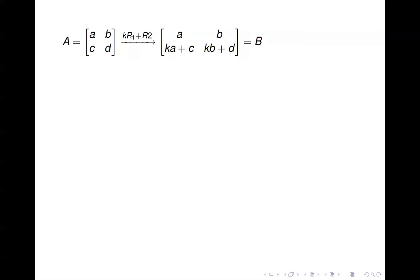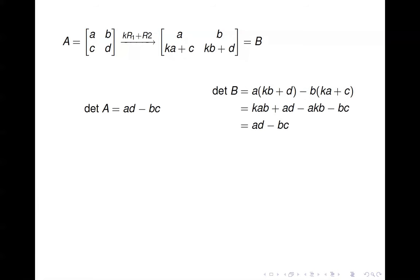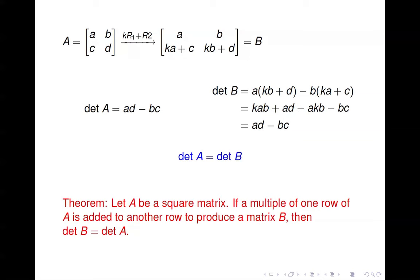Another row operation: multiplying a constant by one row and adding it to another. The determinant of A is AD minus BC. The determinant of B works out to A times (KB + D) minus B times (KA + C). The KAB terms cancel, leaving AD minus BC. So this row operation does not change the determinant at all — which is nice because this is the operation we use 99% of the time. The theorem states: if a multiple of one row is added to another to produce B, then det(B) equals det(A).